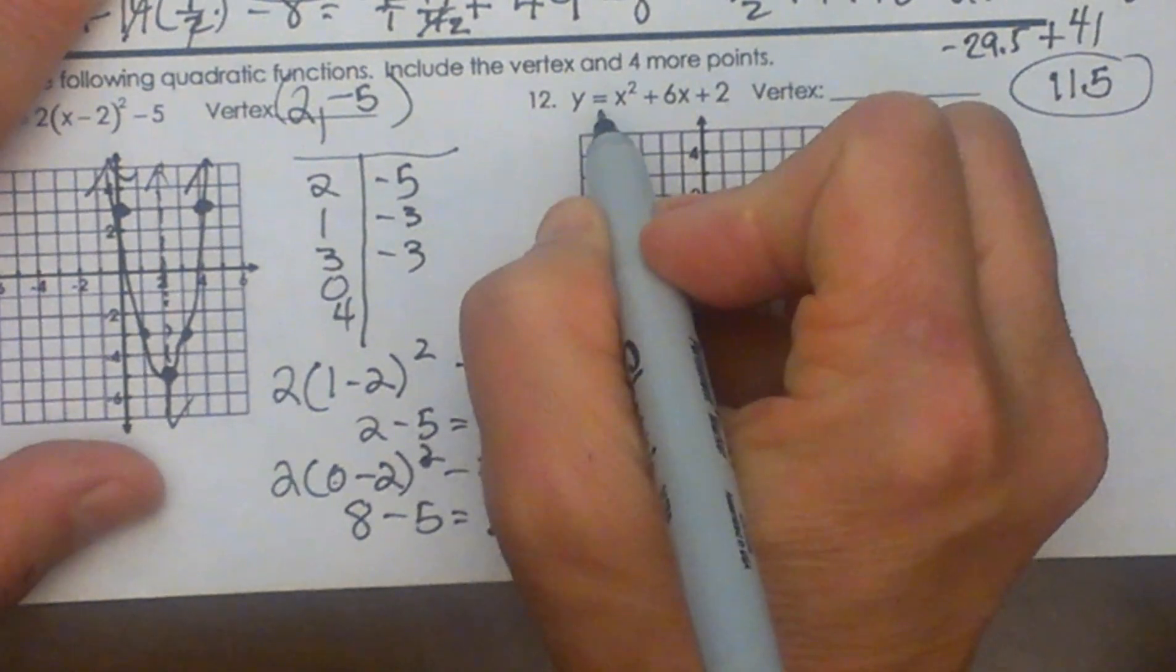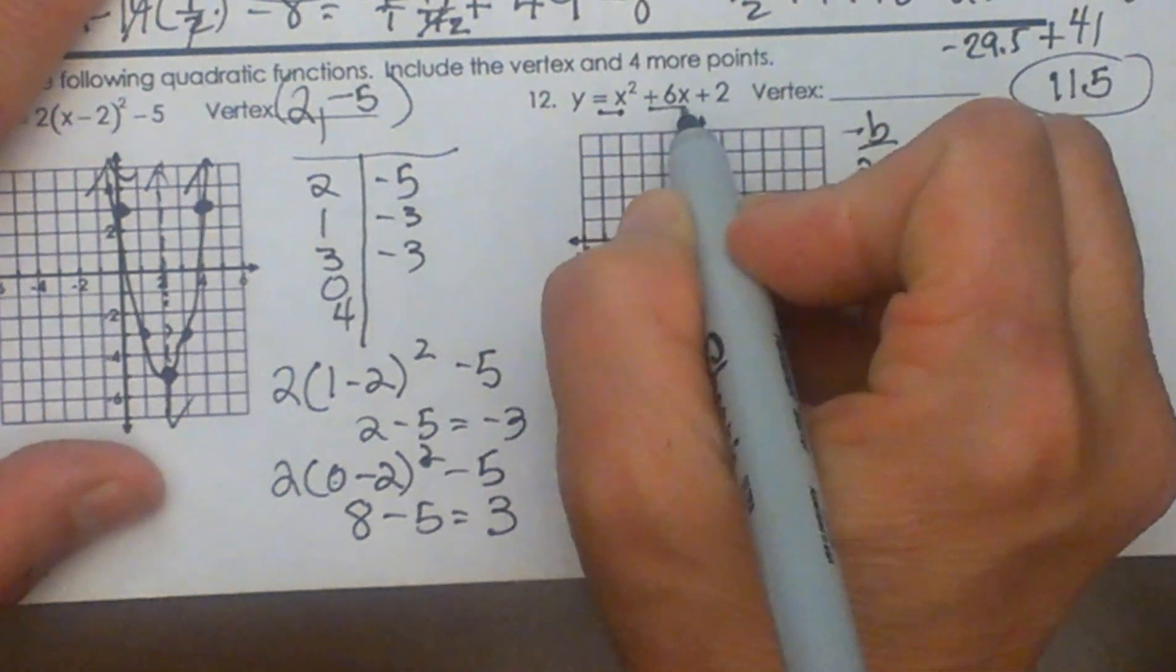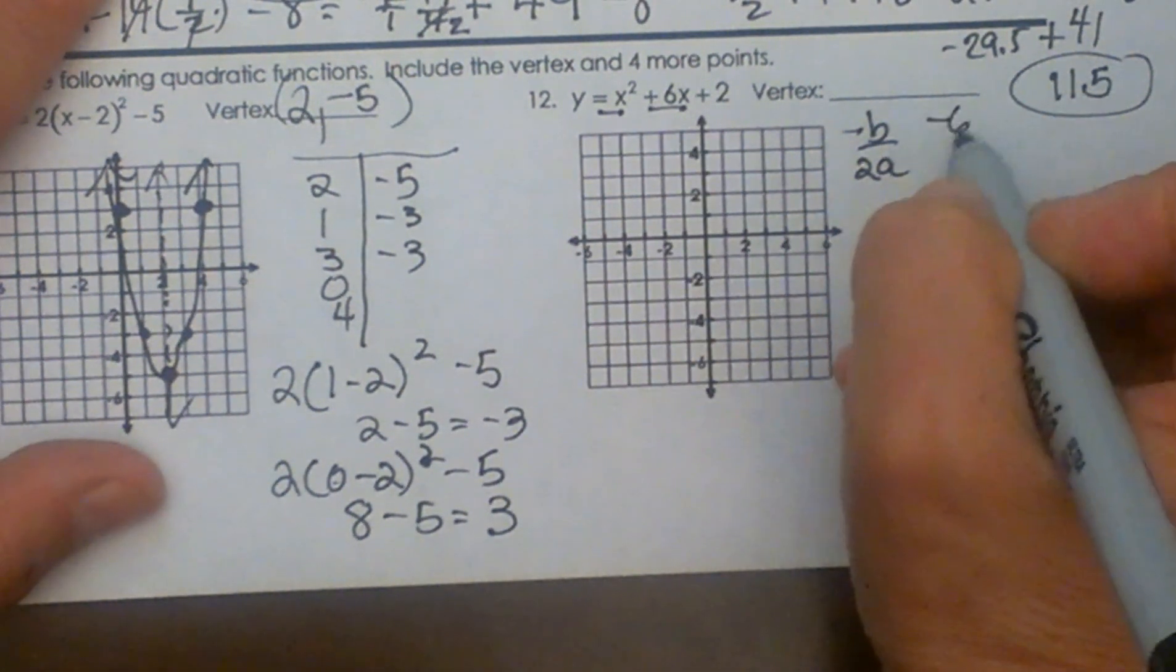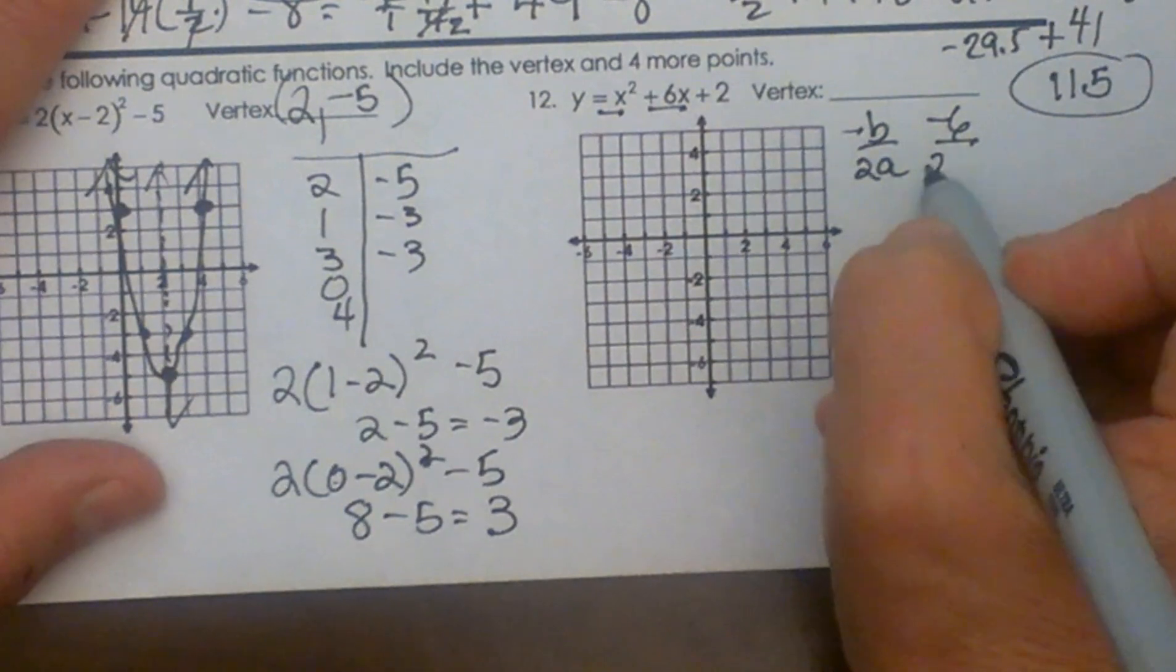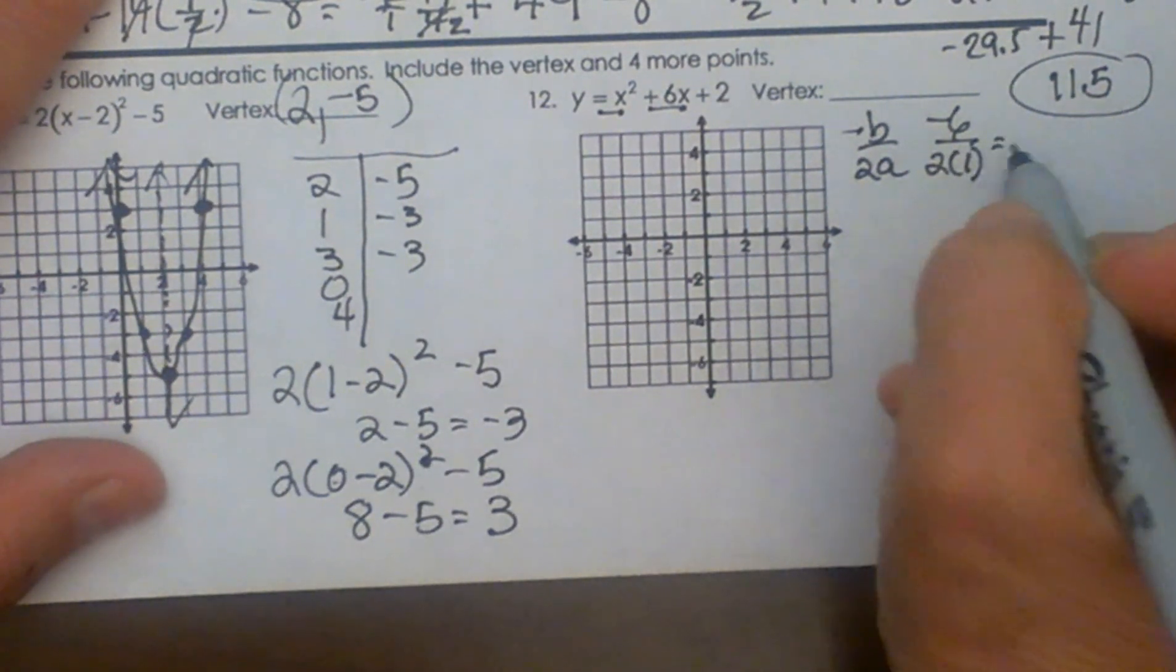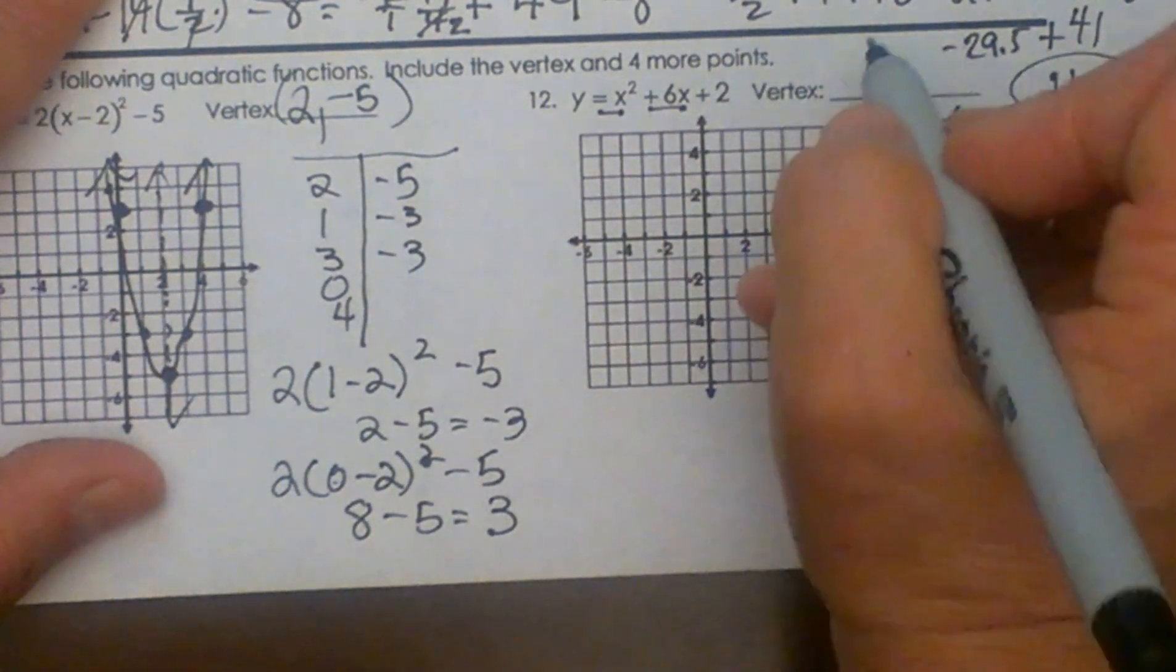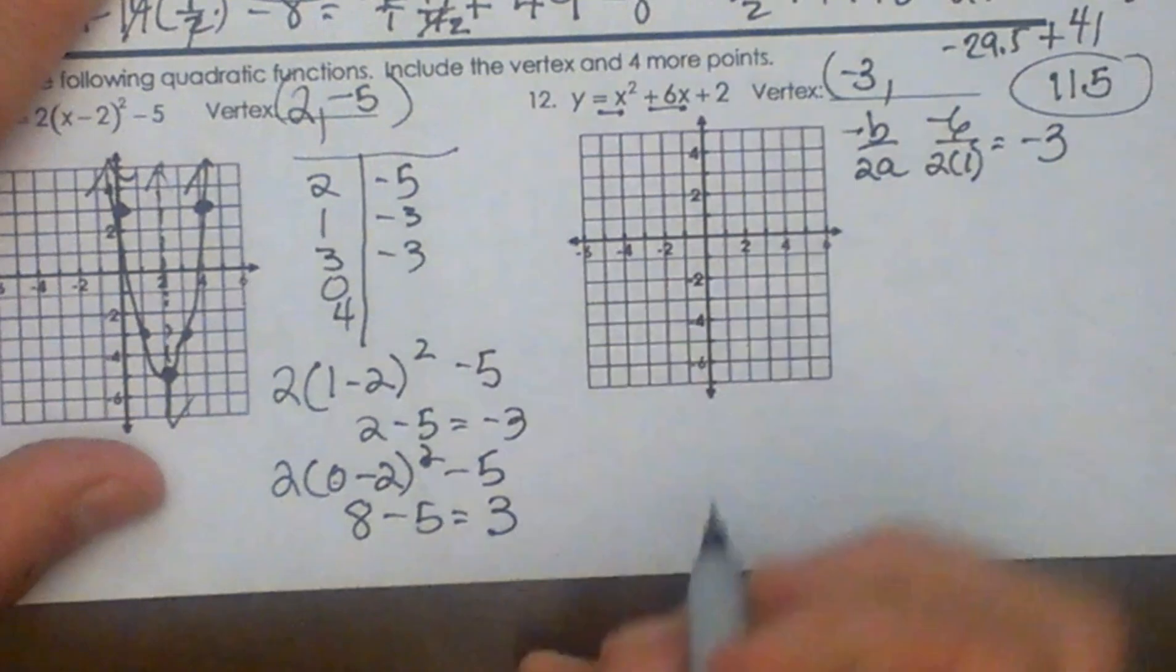In this case a is a positive 1 and b is a positive 6. So negative 6 over 2 times a which is 1 is going to give me negative 3. So negative 3 is the x coordinate of my vertex.